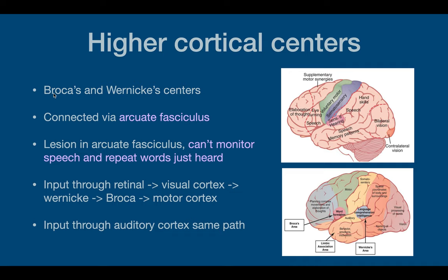When you're reading, there's input through the retina, so the retinal cortex, which goes into the visual cortex, and then to Wernicke's association area — so you're able to recognize the words and understand the language. Then it goes down to Broca's area, where you find the words you want to speak, and then to the motor cortex so the tongue and mouth can move to form the words.